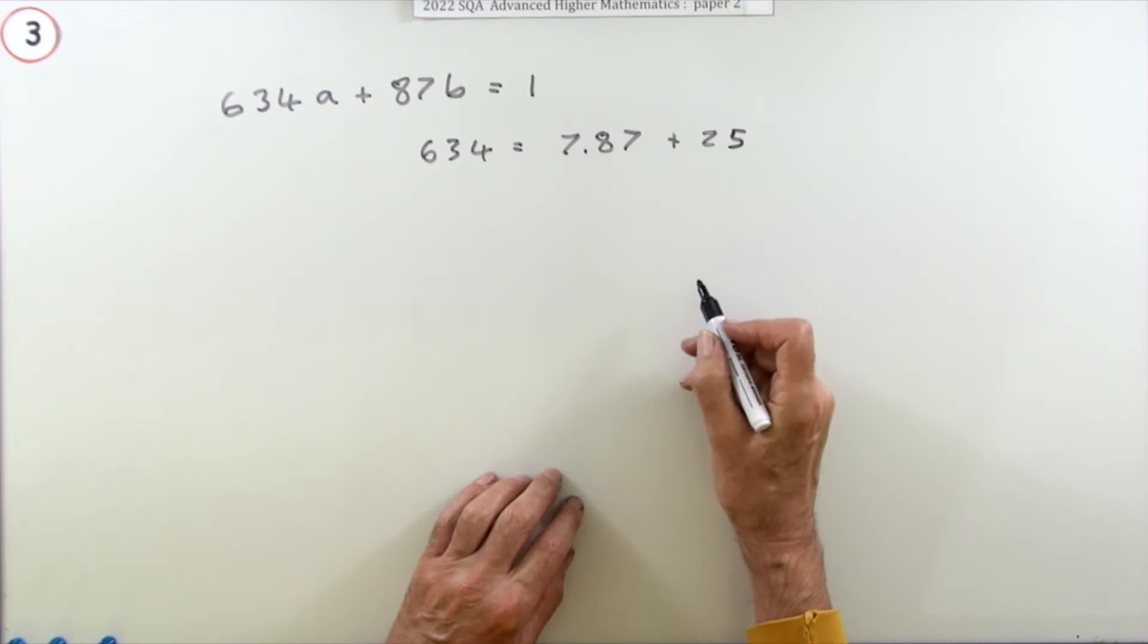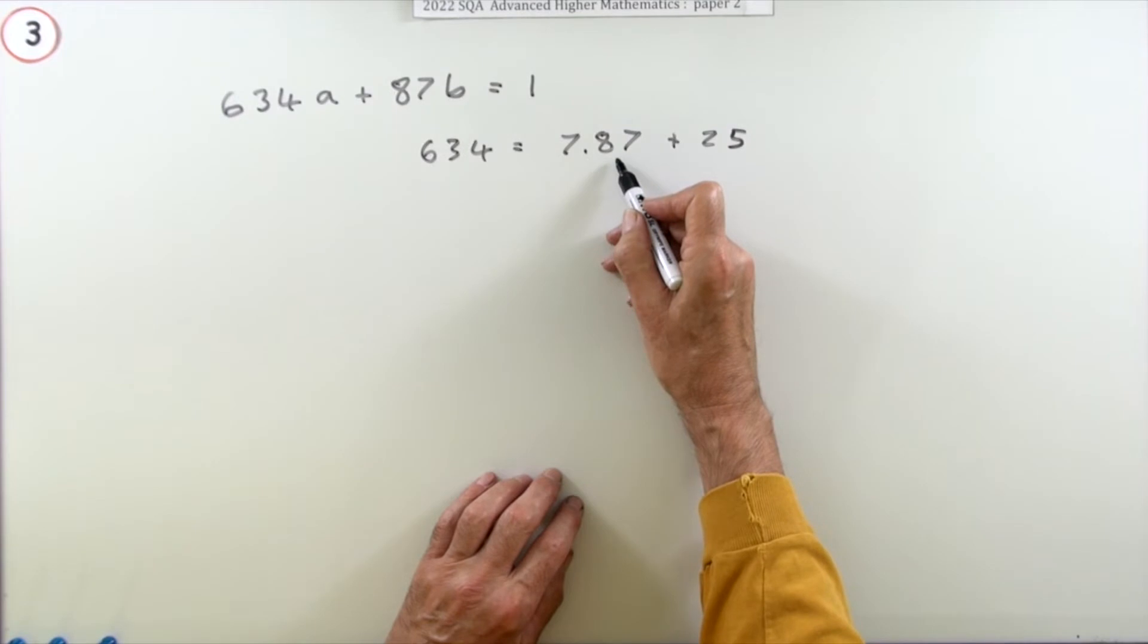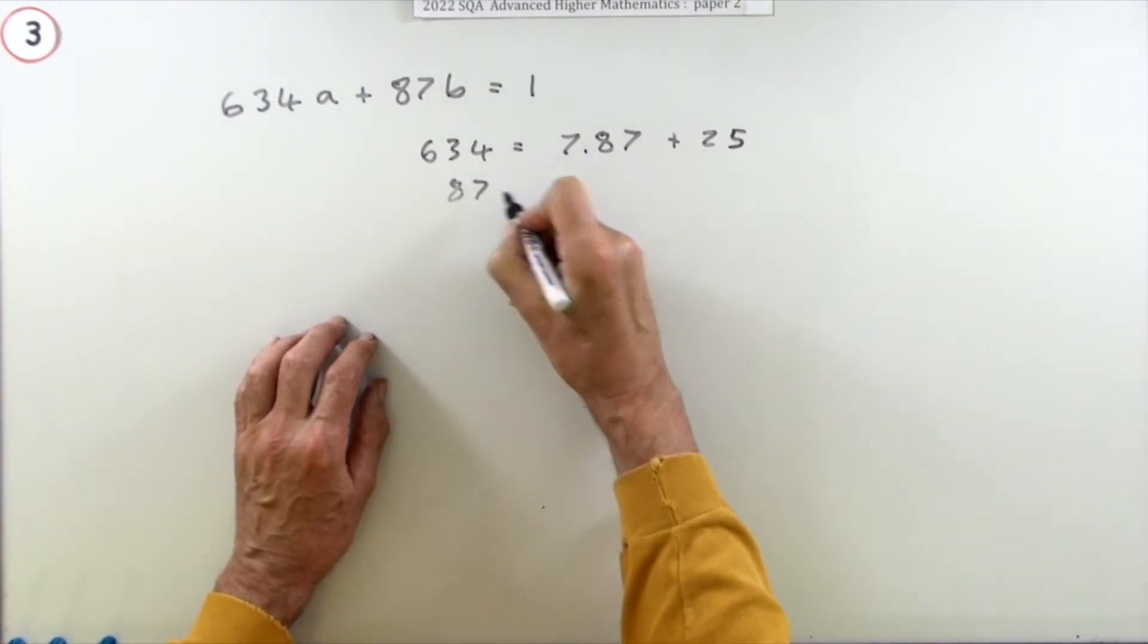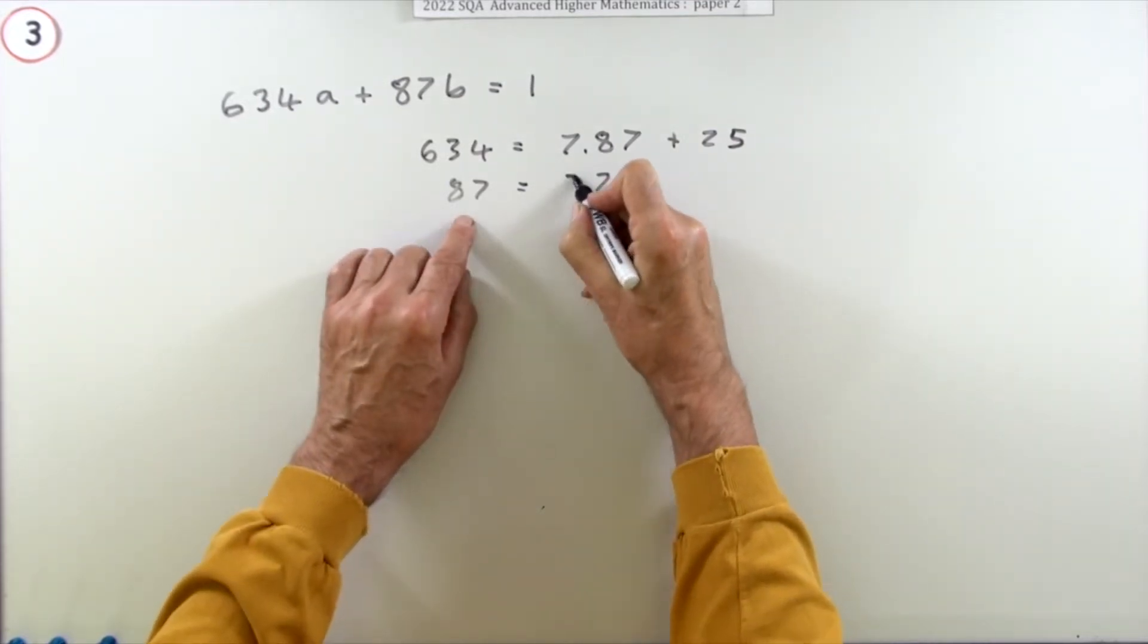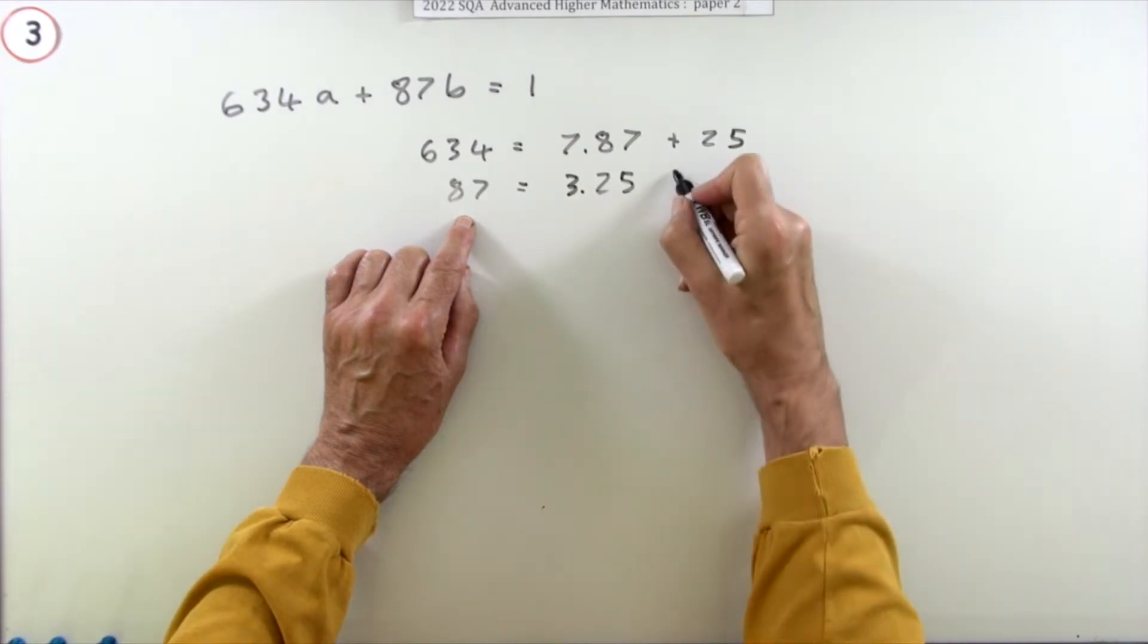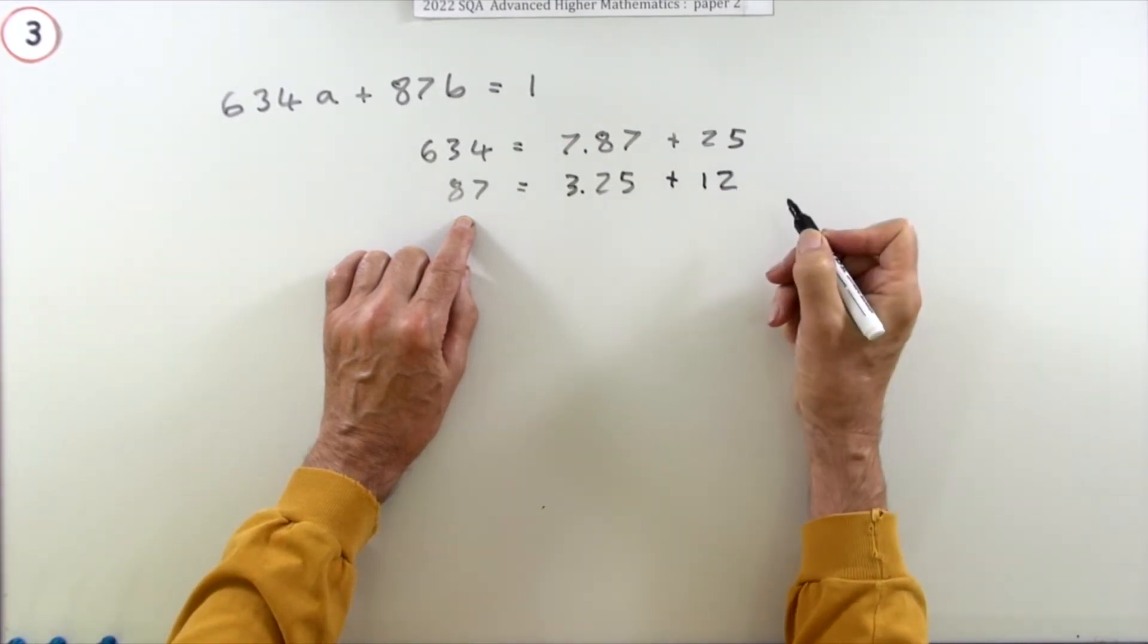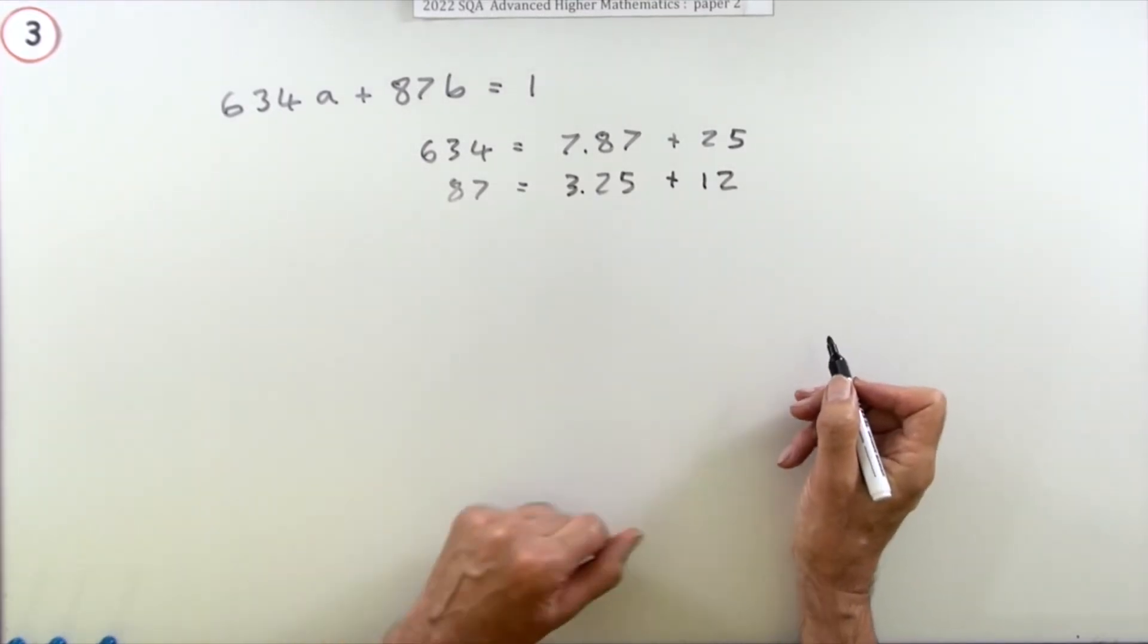If 25 obviously divides into itself, if it also divides into this then that would work. Does 25 divide into 87? There's quite clearly three of them there, that's 75, but unfortunately that means you've got 12 left over.